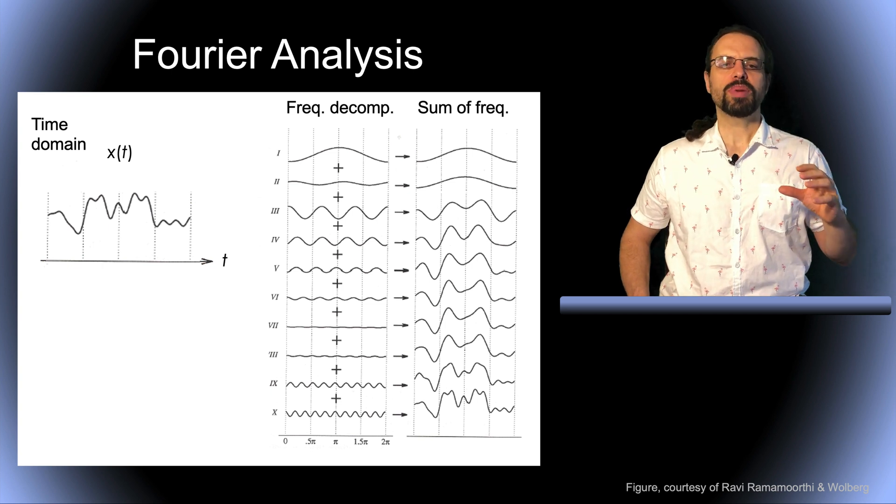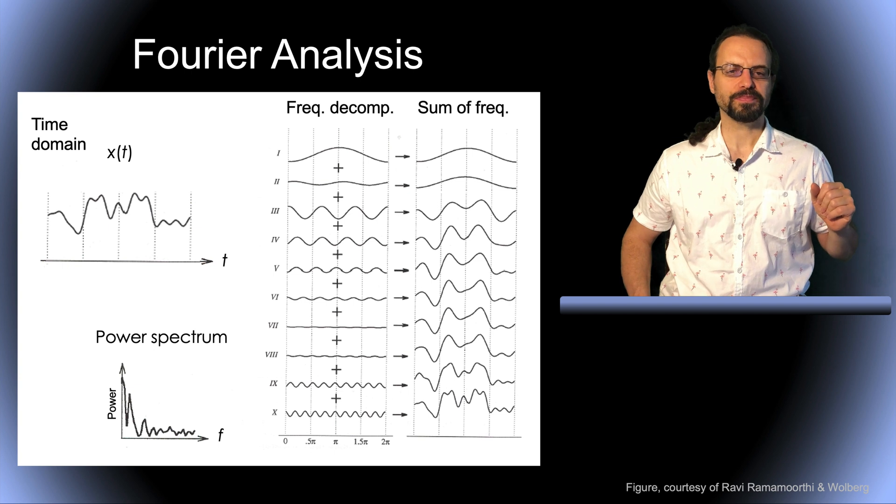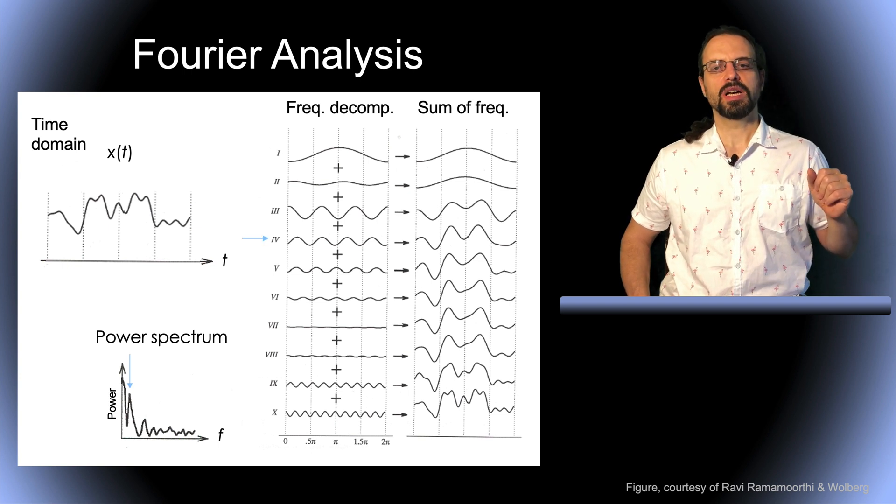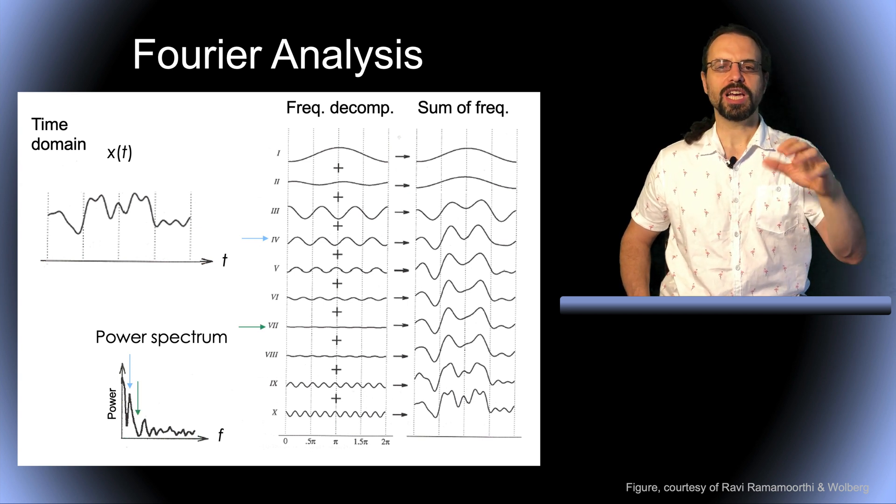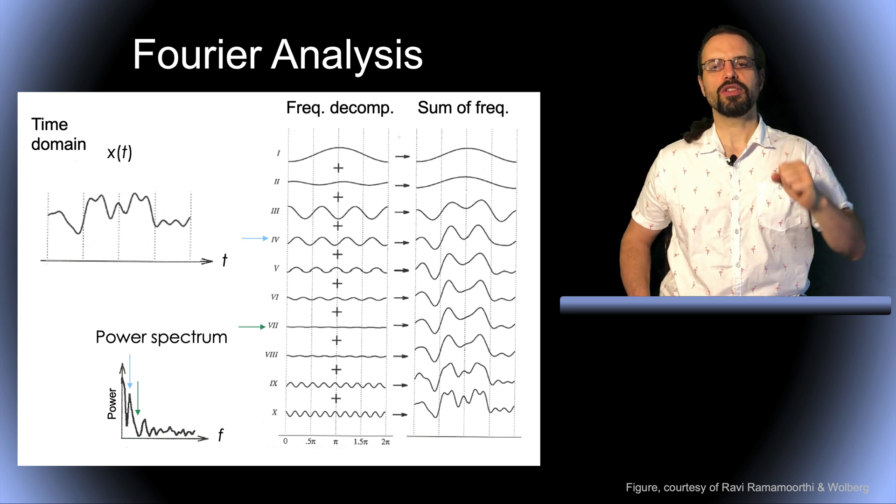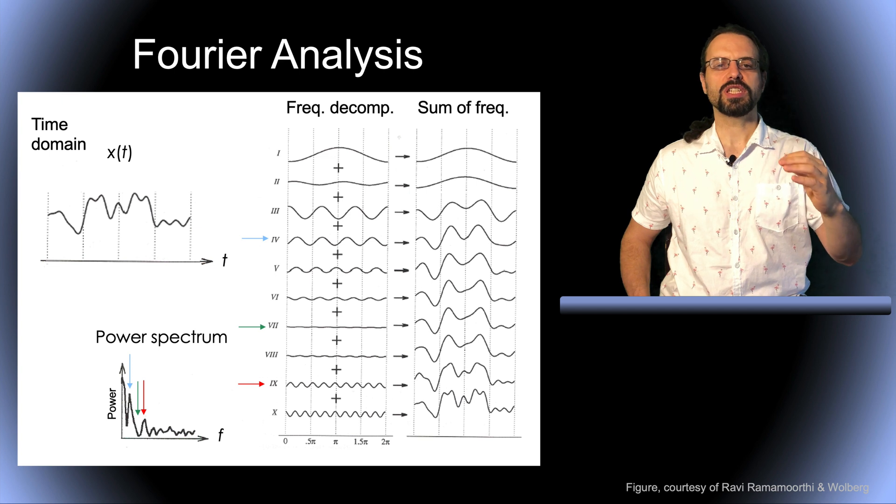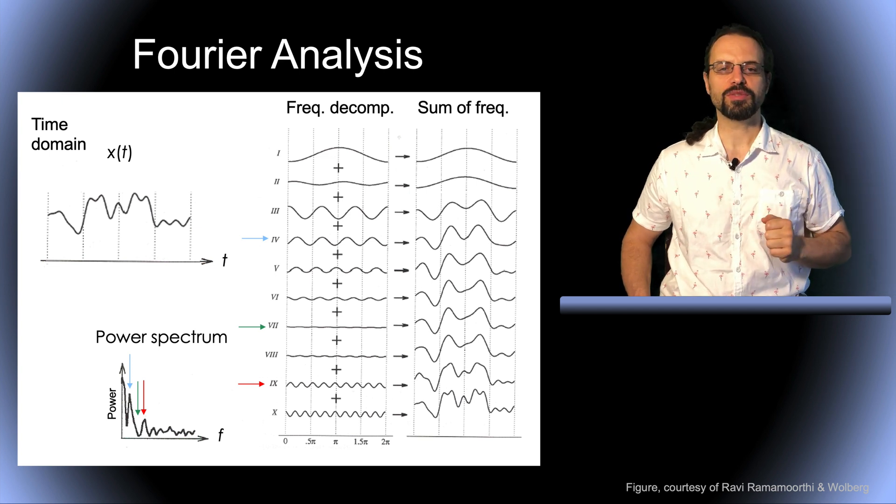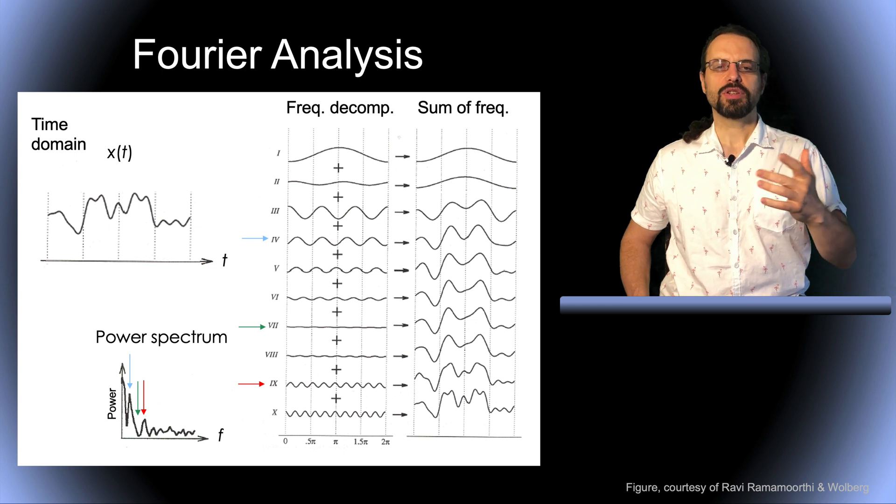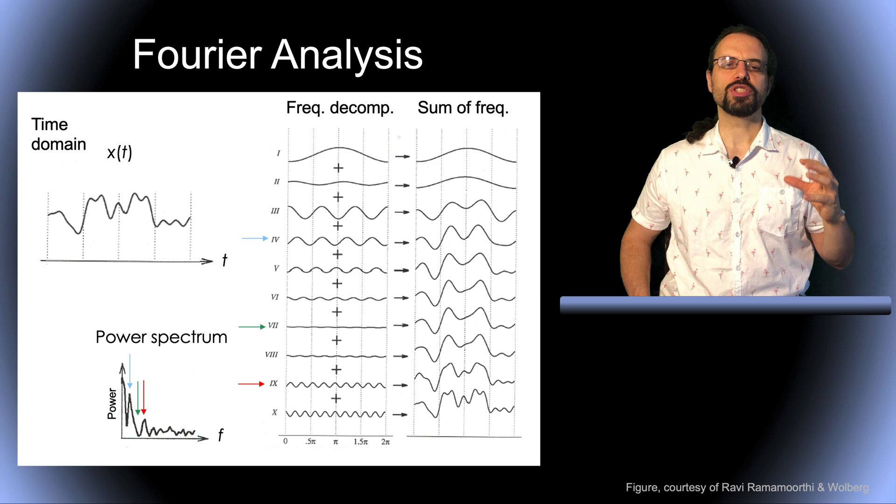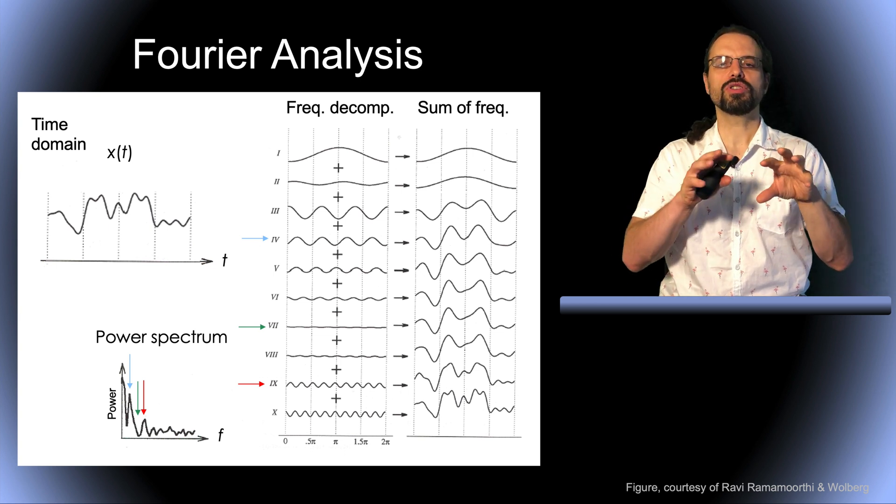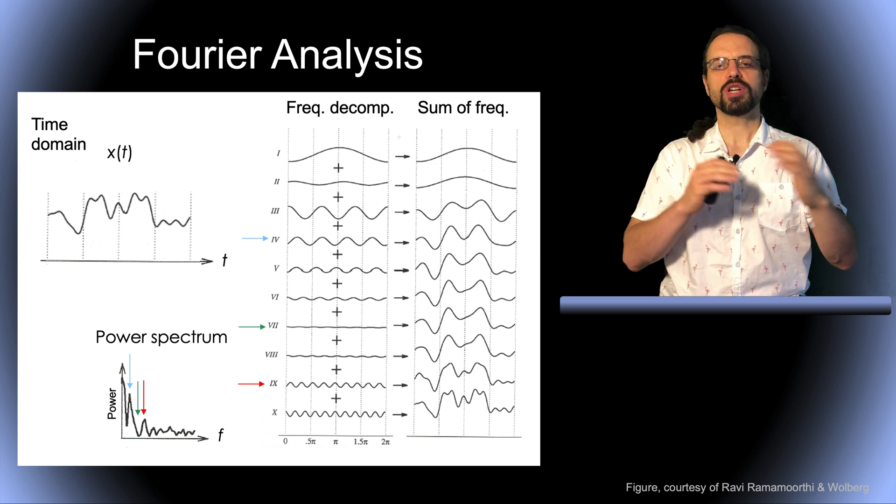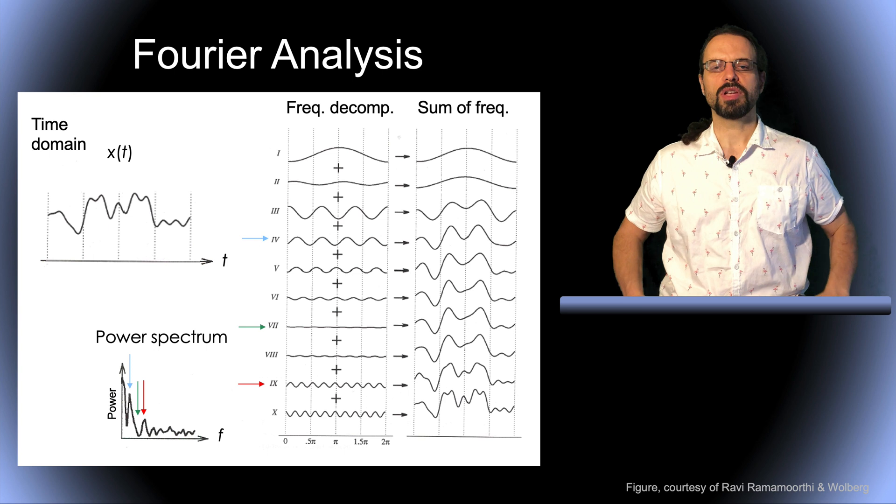We can then construct the power spectrum by just looking at the amplitude at different frequencies. So at this frequency, the amplitude is relatively high, so we have a peak in the power spectrum. At this other frequency, the amplitude is very low, so we have a trough in the power spectrum. And at this third frequency, the amplitude is high again, so we have another peak in the power spectrum. As a side note, the power spectrum is actually not the raw amplitude, but the square of the amplitude of all these frequencies. So this is how the power spectrum is built. And the goal of Fourier analysis is to learn the correct amplitude and phases for each sinusoid, such that their sum reconstructs the original time series.